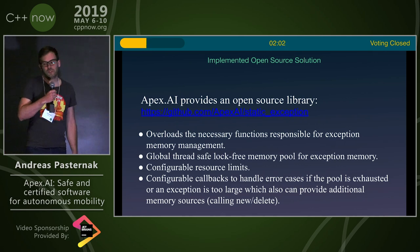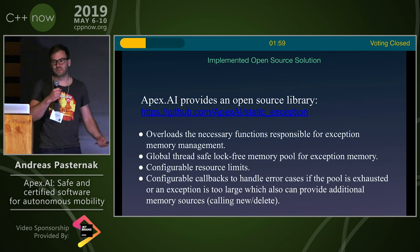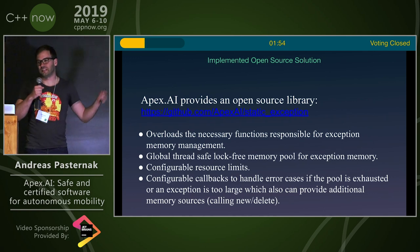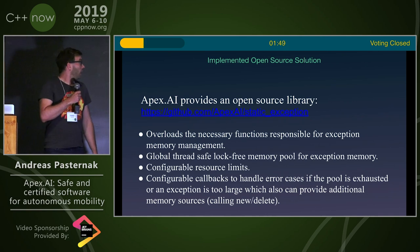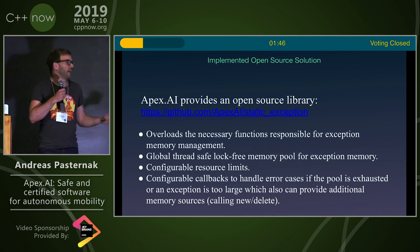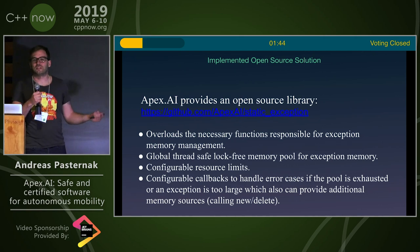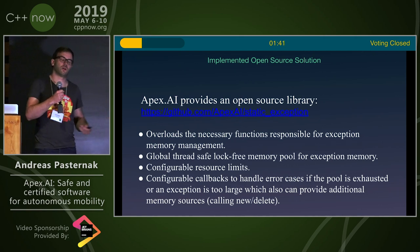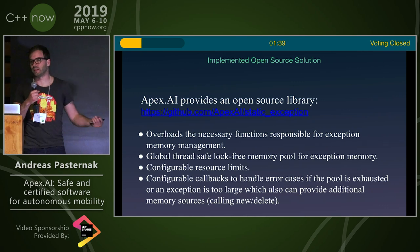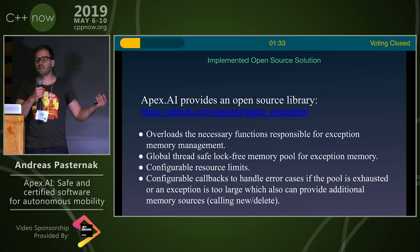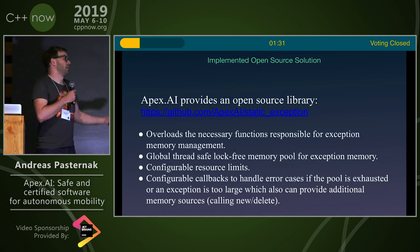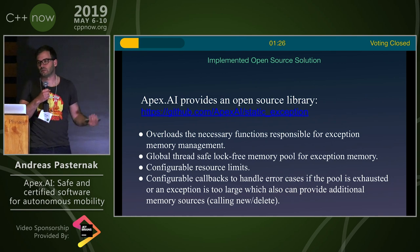It provides a global thread-safe lock-free memory pool for exception memory. As is common in safety-critical and real-time systems, you have very strict constraints: you can have a maximum number of exceptions, the exception can be at most a certain size, and you can configure that resource limit. You can also configure callbacks to handle errors. So if your memory pool runs out of memory or an exception is too large, you can provide an additional means of getting memory — like calling new, or getting memory in a different way. Sometimes it's better to call new than to crash your application.